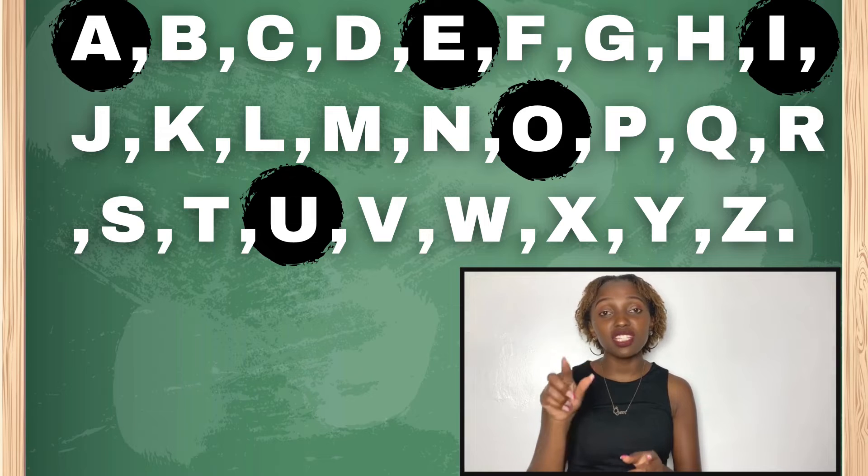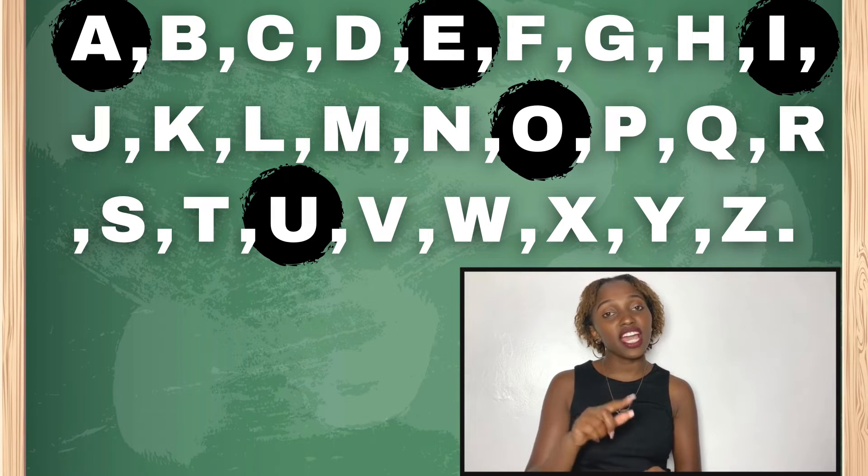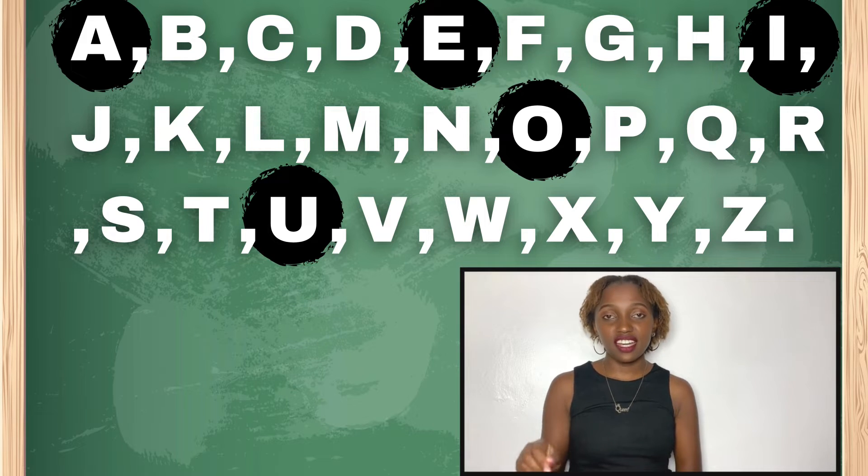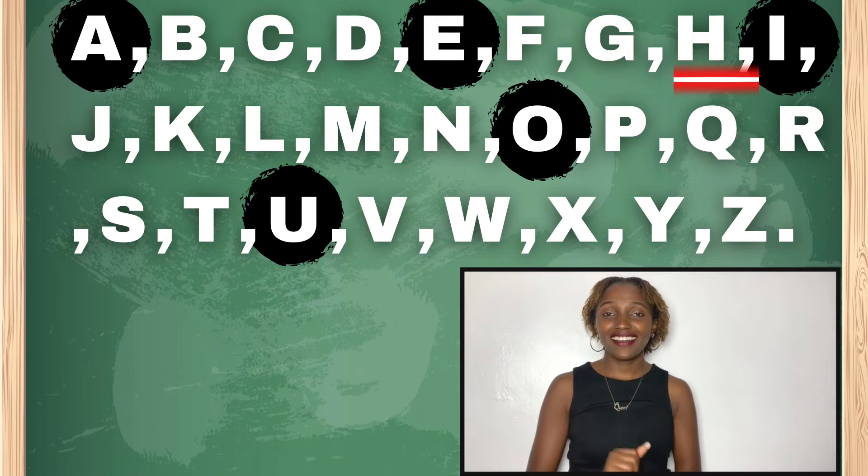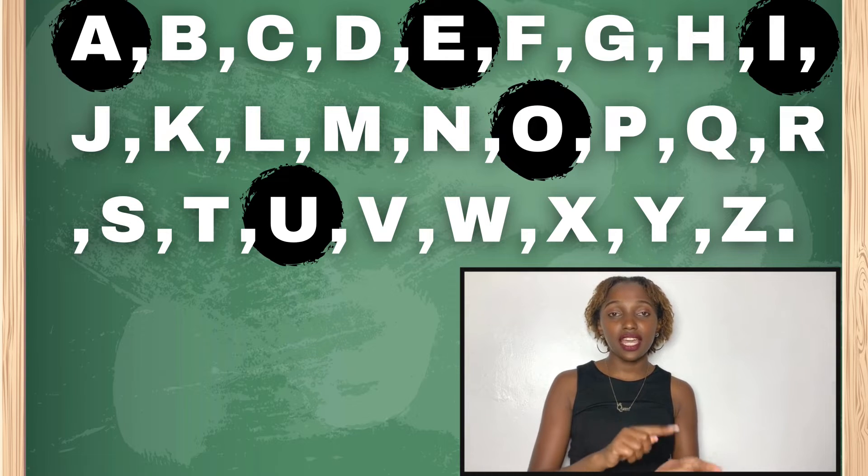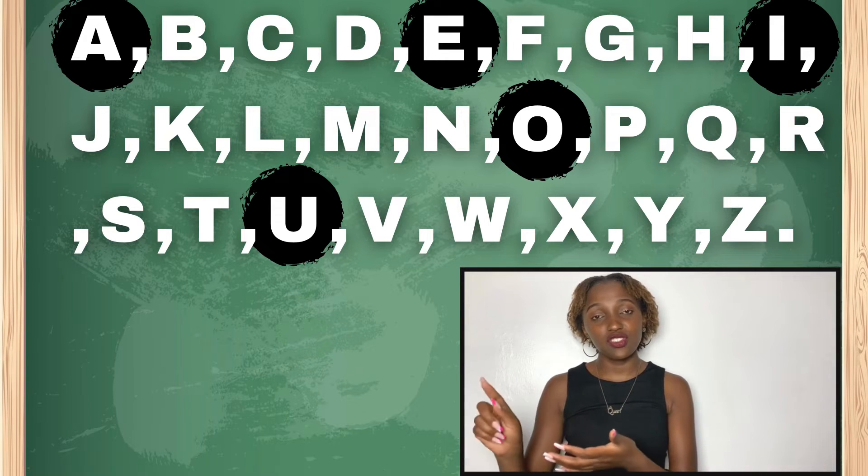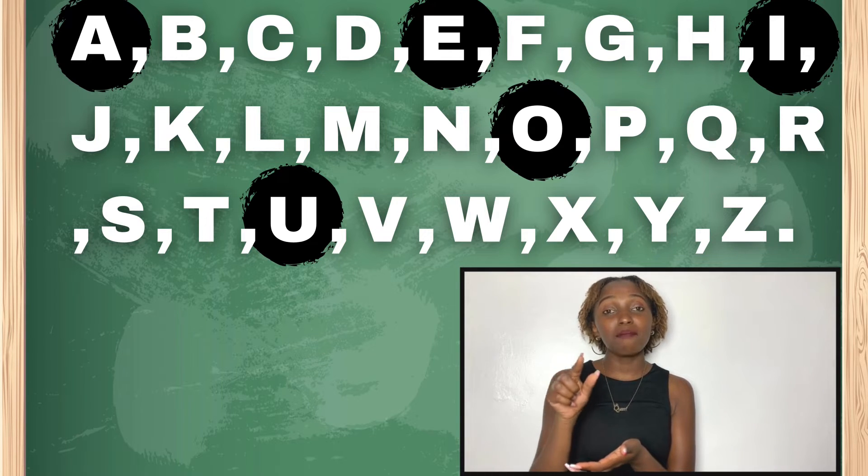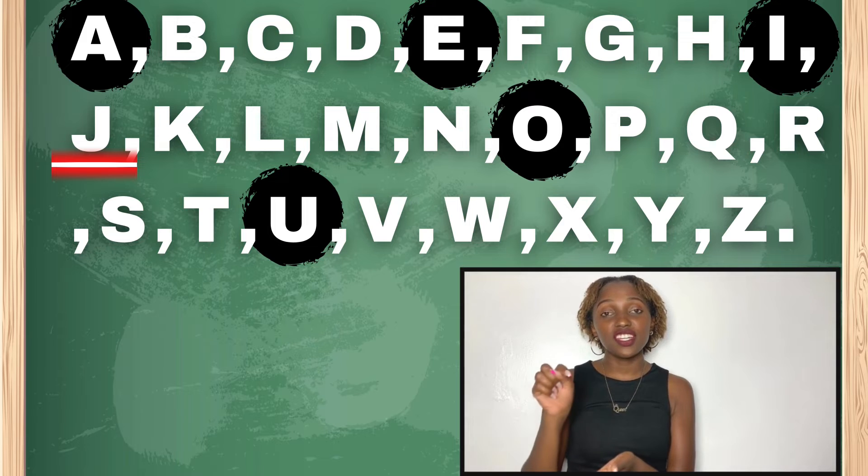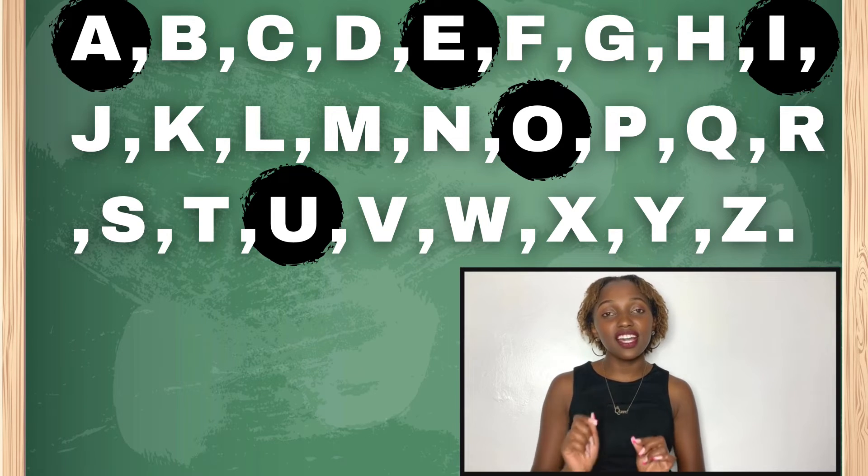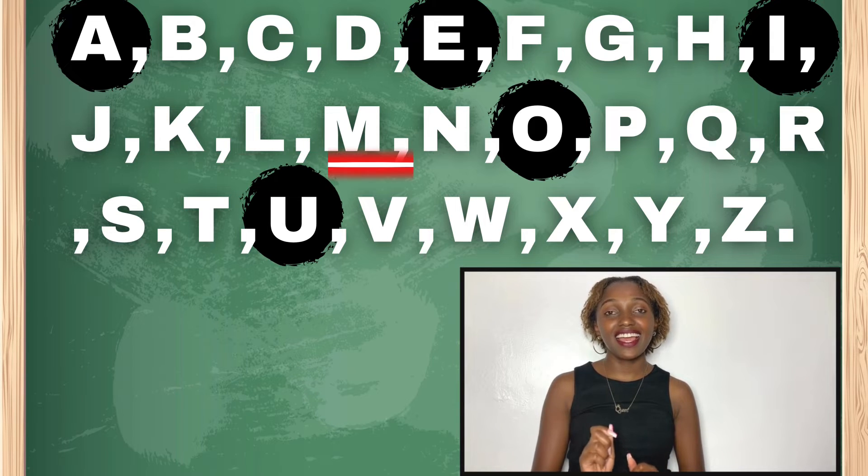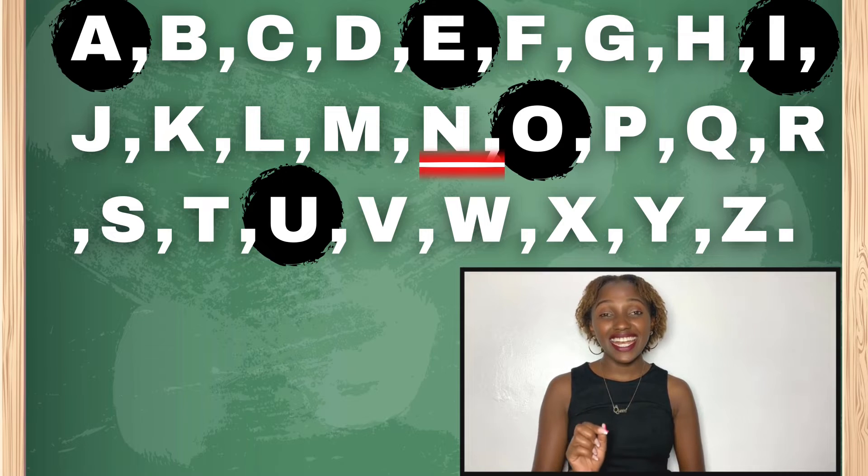Sasa tumetoka kwa I kwa sababu I ni irabu. Kwa hivyo tunaruka I, tunaenda kwa F. F, G, H. Sasa tunaenda tunatoa I, ambayo ni irabu. Tunaenda kwa J, alafu K, L, M, N.